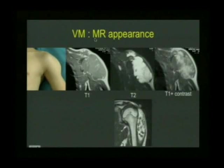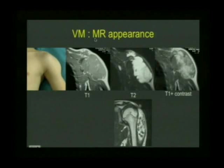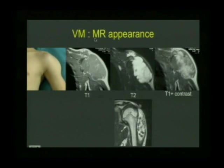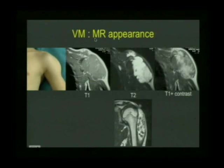So what do we see on MRI in venous malformations? Here's this boy with his shoulder expansion and shoulder swelling. There were no external markers to suggest this was a malformation. This was soft and was slightly compressible. This is the T1, which is relatively iso-intense to muscle.